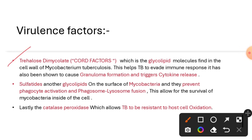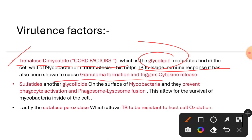The first important virulence factor is trehalose dimycolate, which is also known as cord factor. This trehalose dimycolate or cord factor is present in the cell wall of Mycobacterium tuberculosis. It will help bacteria to evade the immune response. It is also glycolipid in nature, and it helps bacteria to cause granuloma formation and trigger cytokine release.